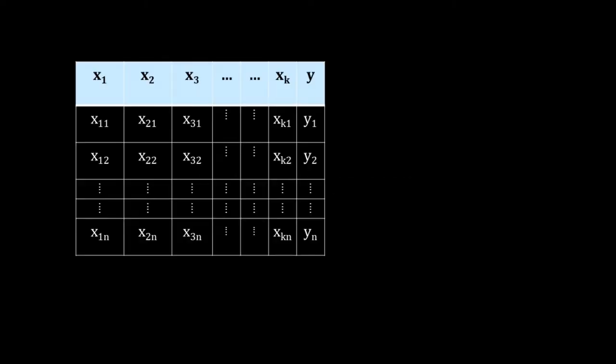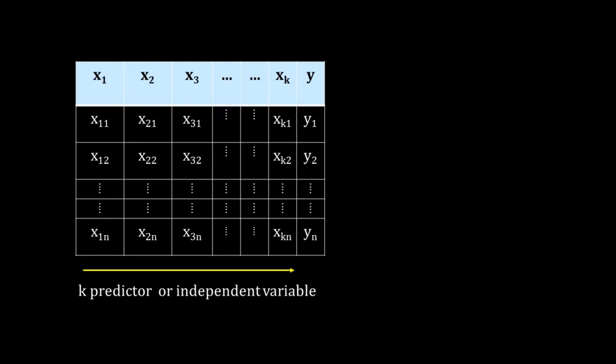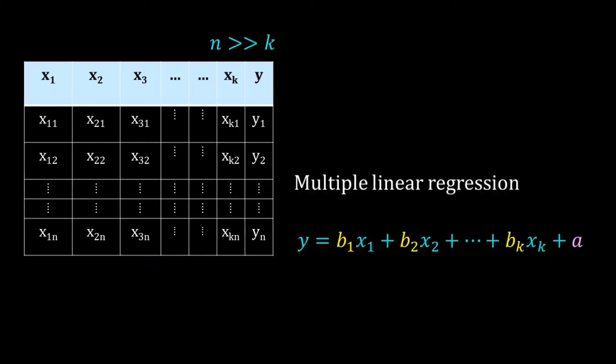Welcome back. We have learned linear regression with one independent variable. Now in this video we will learn multiple linear regression — a linear regression where we have more than one predictor or independent variable. Here is a data table: y depends upon k number of independent variables x1 to xk, and we have n data points where n is bigger than k. We want to fit the data to an equation of the form y = b1*x1 + b2*x2 + ... + bk*xk plus a constant.